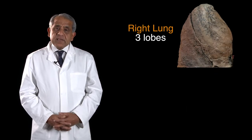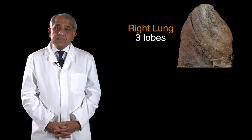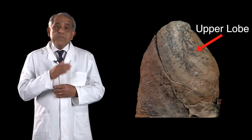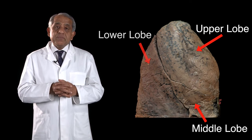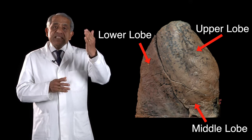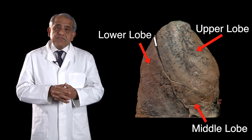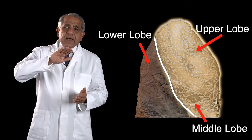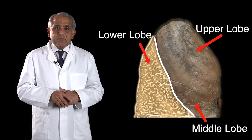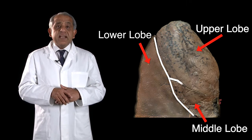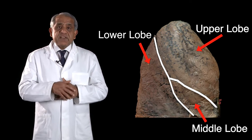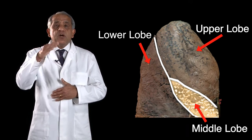The right lung typically has three lobes, while the left lung by contrast has just two lobes. The right lung has an upper lobe, a middle lobe, and a lower lobe. There is a very deep obliquely placed fissure — a full thickness fissure — which separates the upper and middle lobes on the one hand from the lower lobe. And there is another fissure, a smaller fissure but very deep nevertheless, a transverse fissure which separates the middle lobe from the upper lobe.